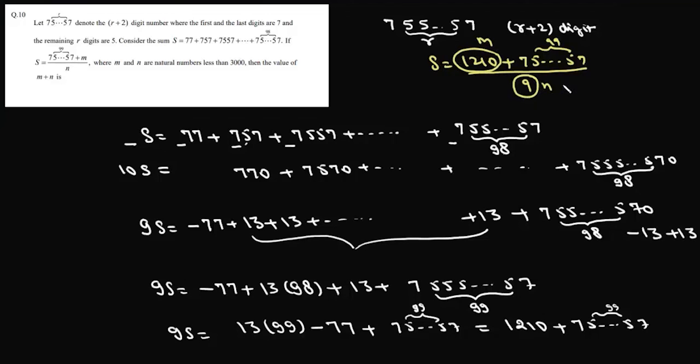We need to find the value of m plus n, so value of m plus n is 1210 plus 9 so there'll be 1219 and that is the answer to this question.